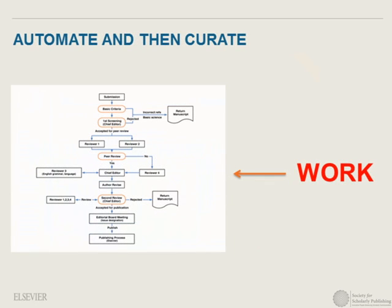A really hard concept to get our minds around is automating and then curating. As publishers, we curate and then maybe automate — we send everything through peer review first. That's a lot of work, and we need to think about whether we're getting the best use out of that work. We could be using that peer review and editorial work to help our automated systems drive applications. In general: automate and then curate.